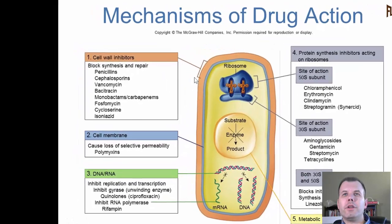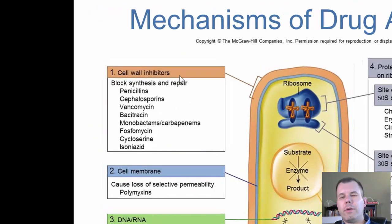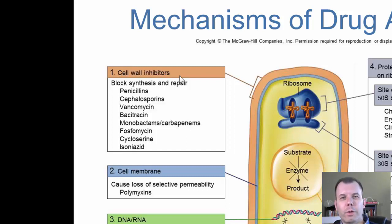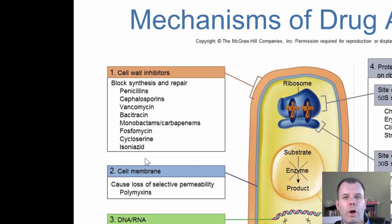Here are the mechanisms of drug action. The first one - cell wall inhibitors - I would say about 60 to 70% of all our antibiotics that we take as a drug-taking nation are going to be against the cell wall. Not a lot of toxicity because we don't have cell walls. These drugs are relatively safe, targeting bacteria especially those with really thick cell walls. These include penicillin, cephalosporins, vancomycin, bacitracin, monobactams, phosphomycin, cycloserine, and isoniazid. These are all very common, well-known drugs that all target cell wall synthesis.